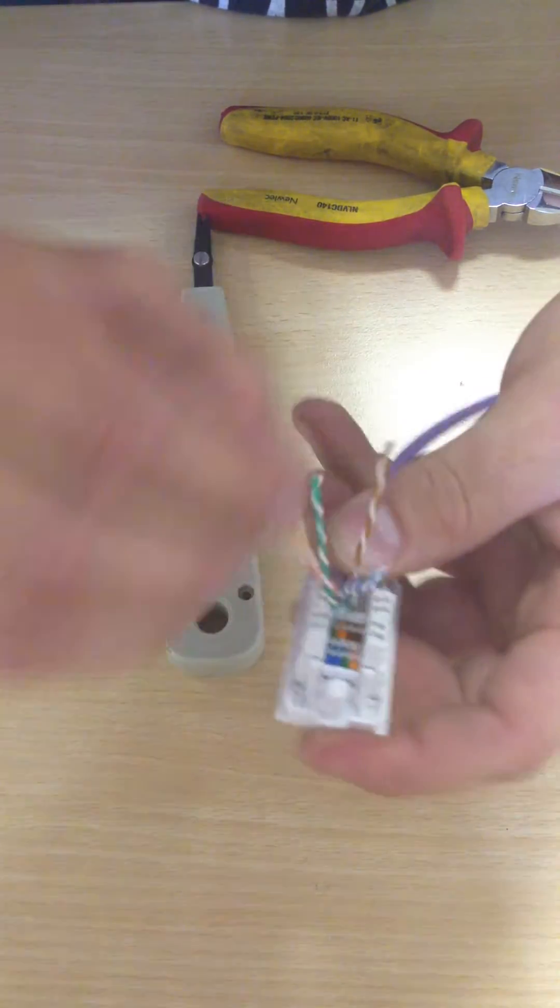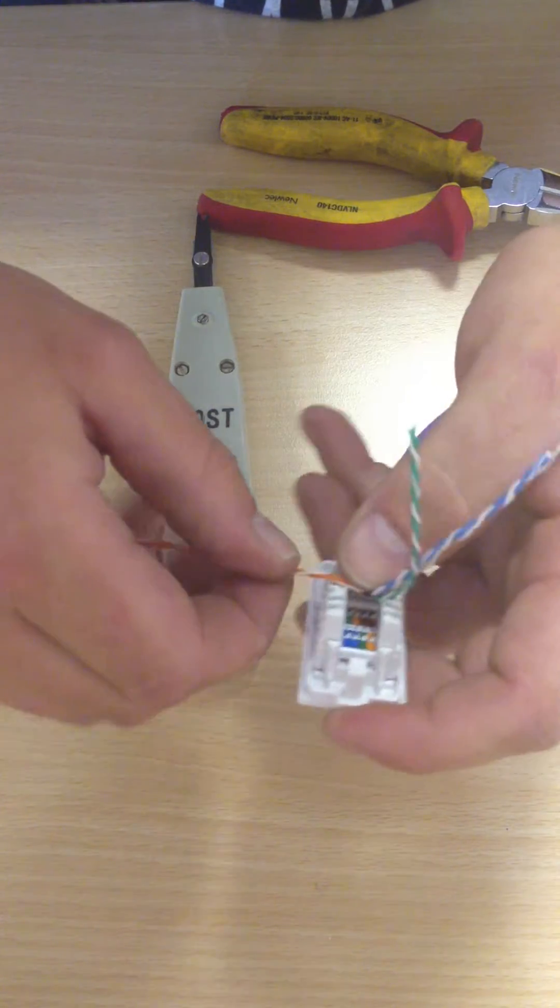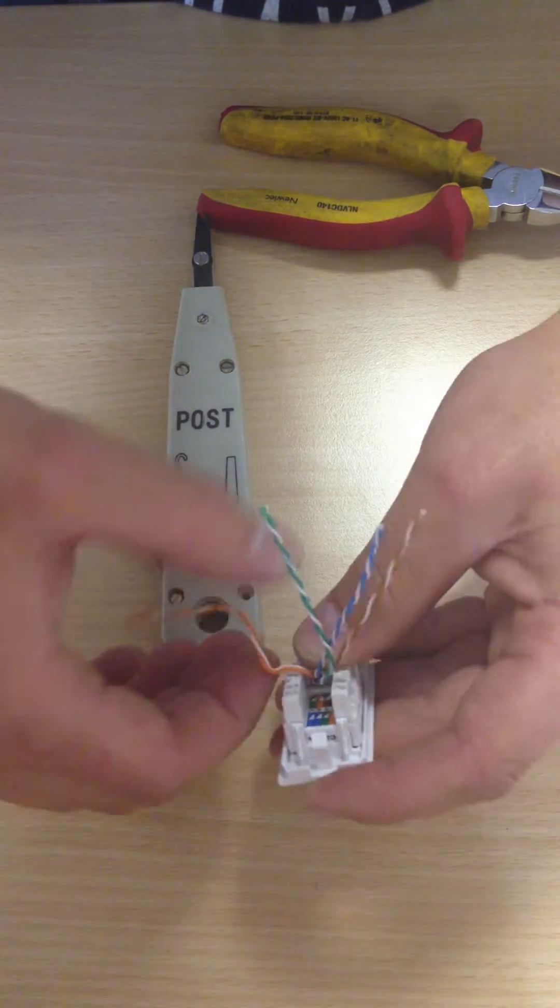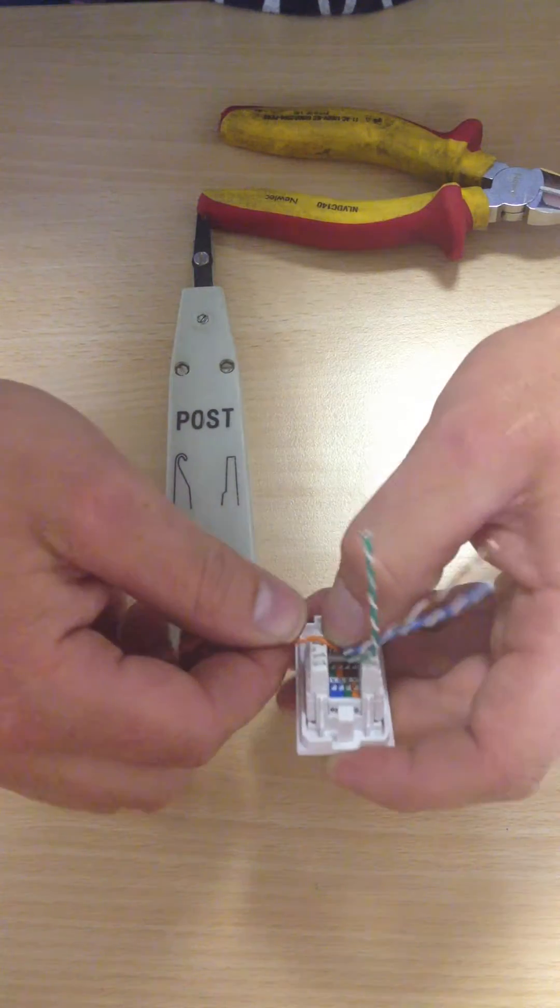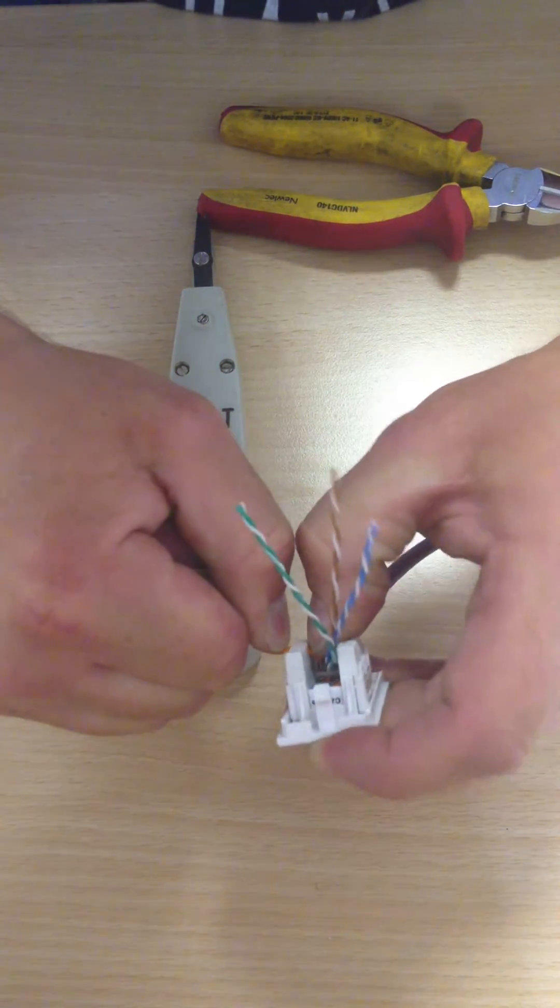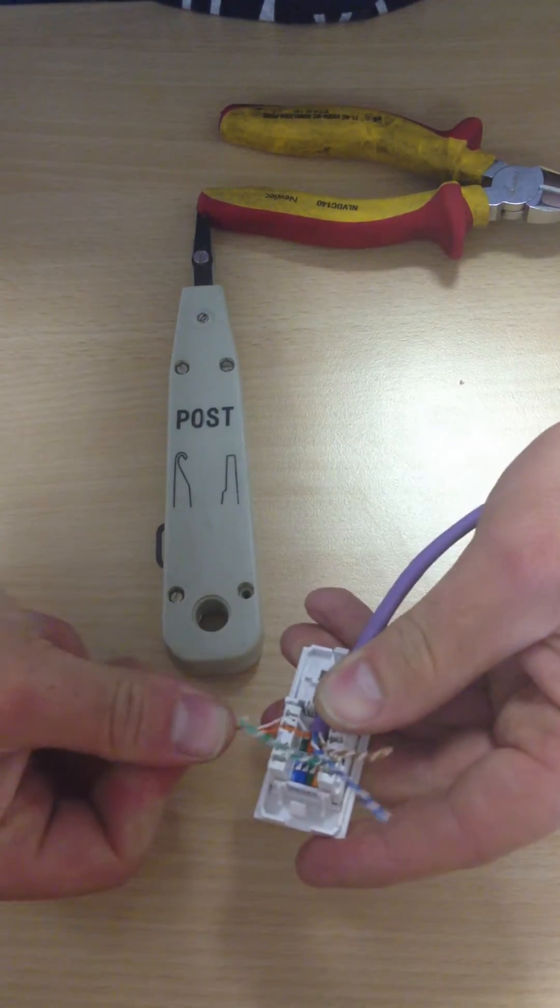Right, so we want the orange and orange white there. Try and keep these as twisted as possible and just untwist as much as you need, no more. So there is the orange and orange white in there.